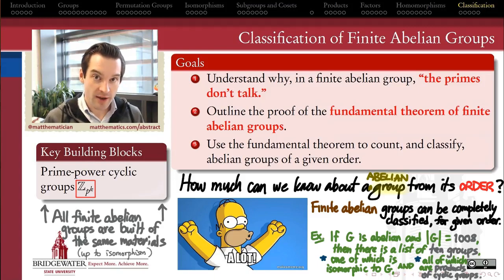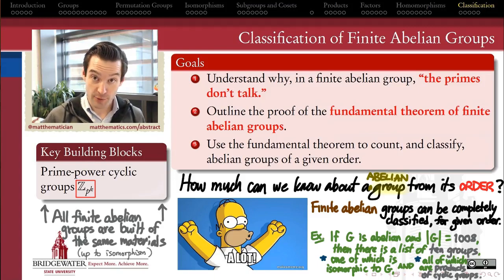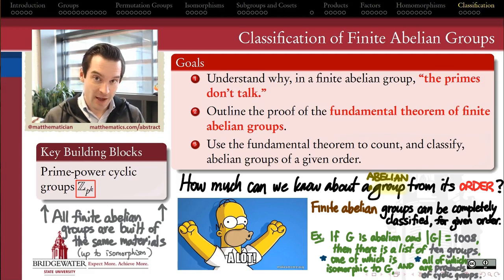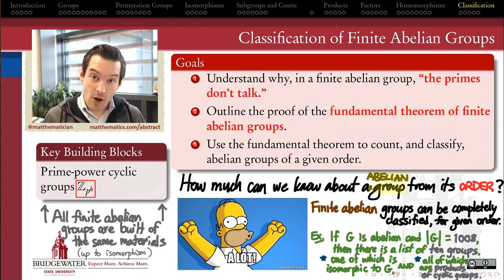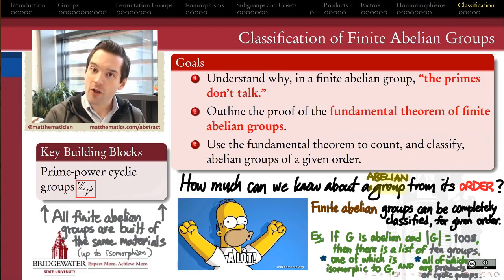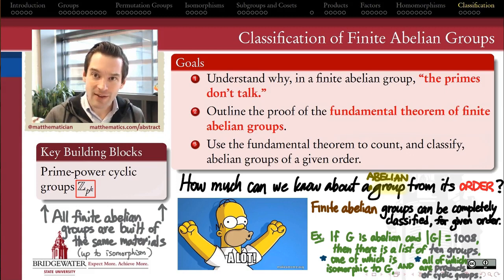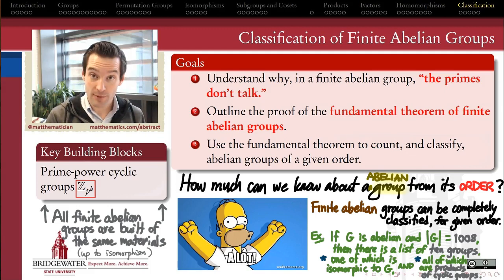We're finally ready to make our case for the fundamental theorem of finite abelian groups. That's the theorem that lets us classify — if I know the order of a finite abelian group, I should be able to give you a complete list of all the groups to which that group can be isomorphic. In other words, all the possible structures, all the possible Cayley tables that we could write describing the behavior of that group.